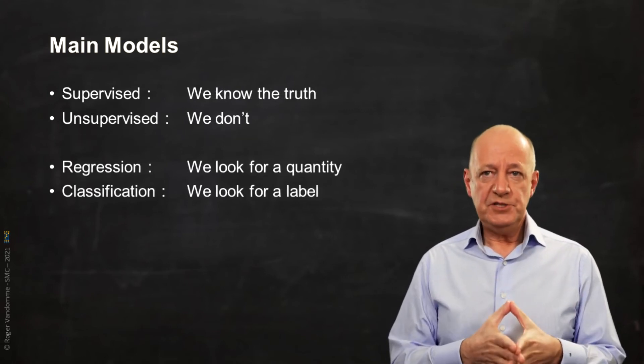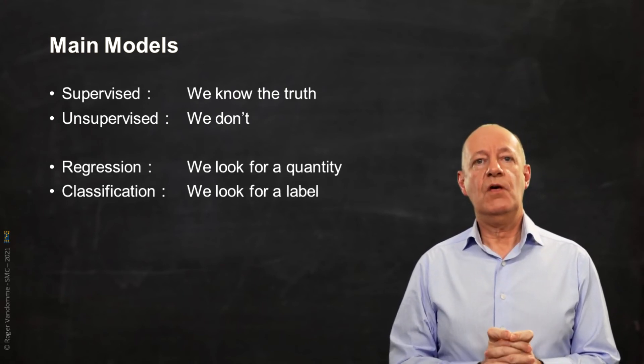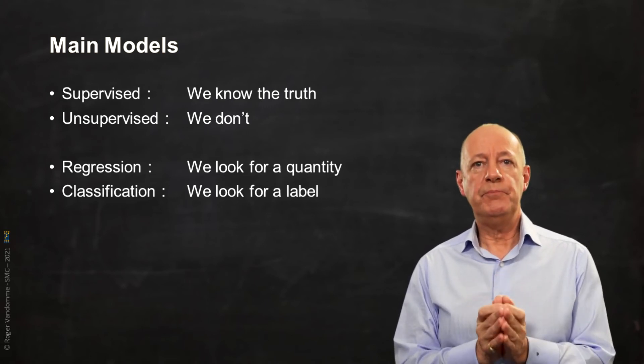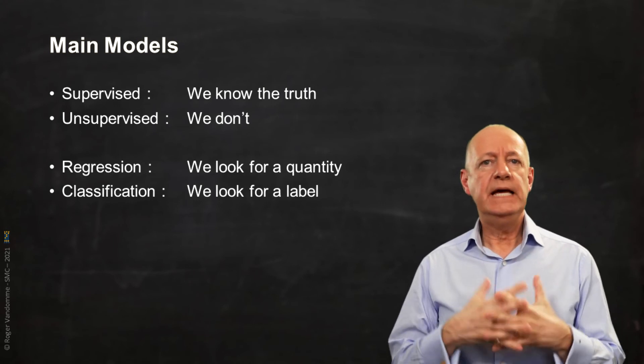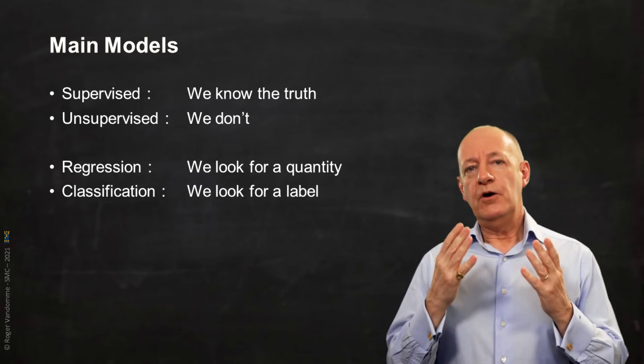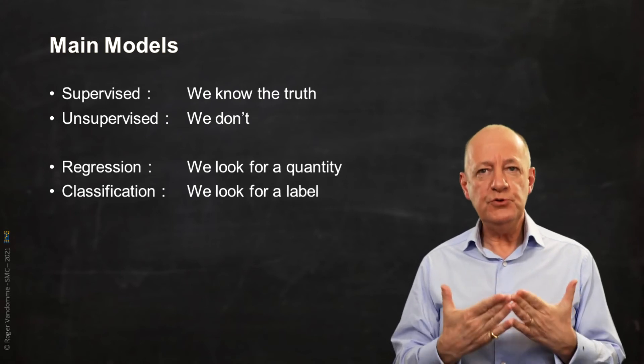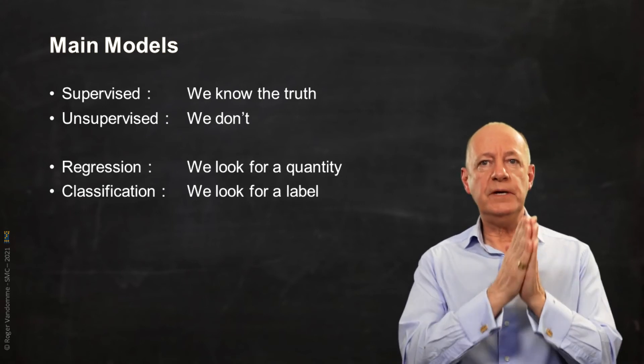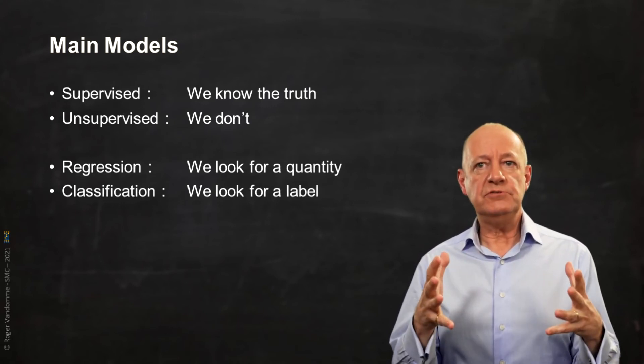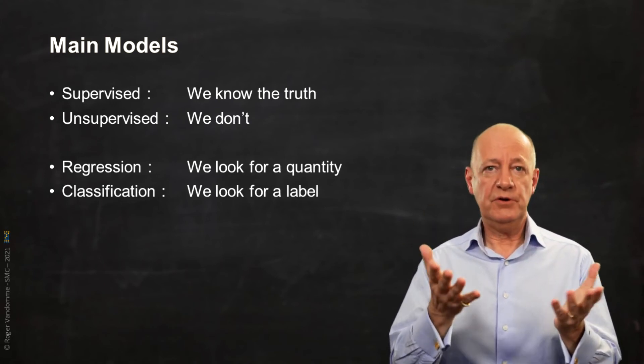In the case of a supervised model, we have regressions and classifications. A regression is intended to predict a number, a dimension. It can be a volume, a distance, a temperature, a price. A classifier is a model that will give us the probability for a new observation to belong to a category, to a class. For example, models analyzing images and labeling them. This is probably a cat, this is probably a dog, a tree or a car.